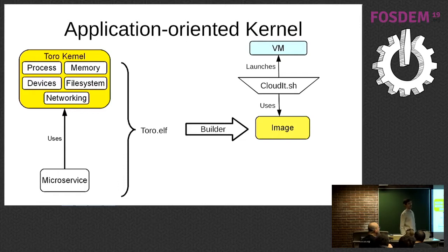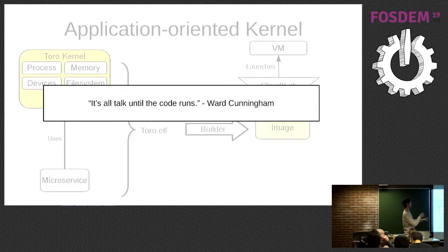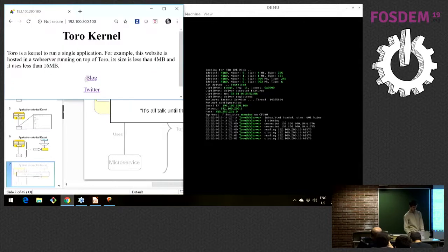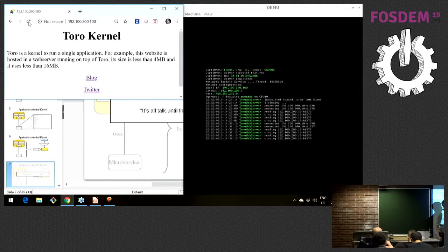From this binary, we have a set of tools with which we can first generate an image. And by relying on another tool called Clody, we can then launch a virtual machine. To demonstrate all this work, I will just show a simple demonstration. Here for example, we have Toro running a simple microservice which is serving index.html. Here you see the result — what you see is more or less the initialization of all the drivers, the networking, and so on. And then from here, you see the user application start to execute.